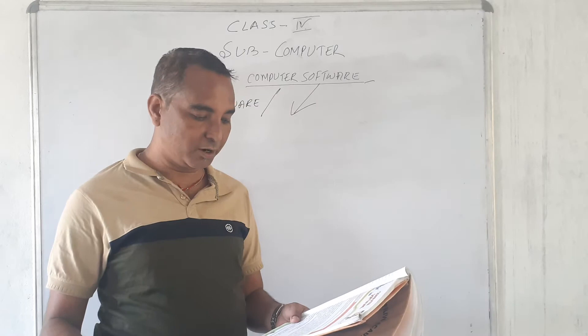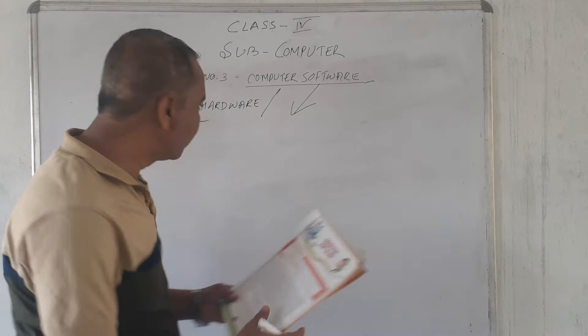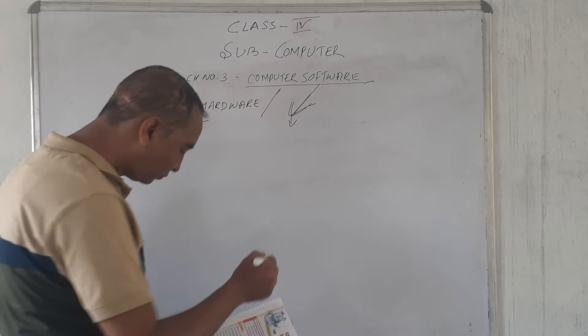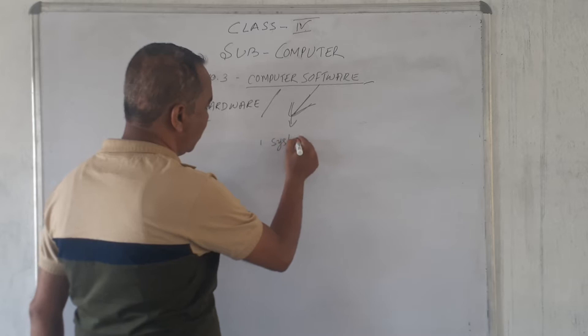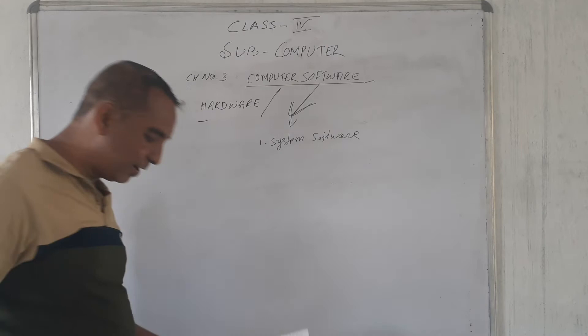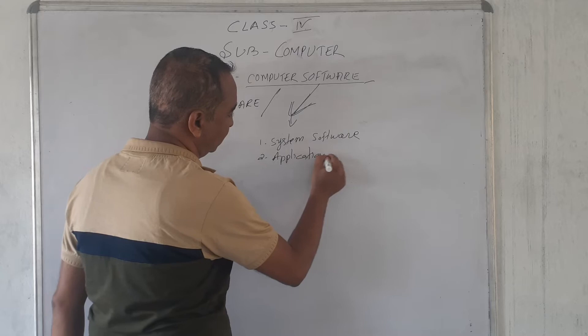So, software is classified into two types. Now, software also, there are two types. What are they? One, system software and application software. Number two, application software.